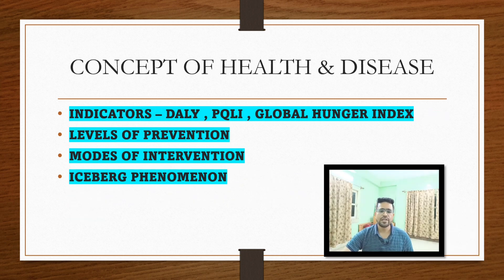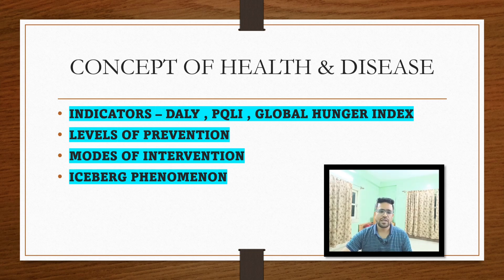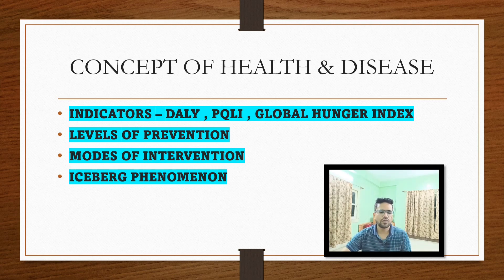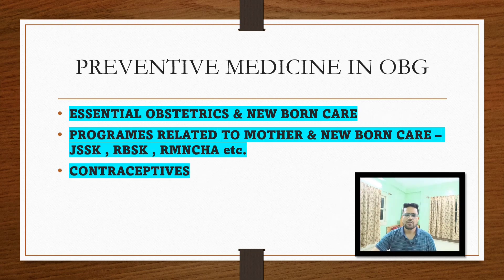From the concept of health and disease chapter, read indicators like DALY, PQLI, global hunger index; levels of prevention — primary, secondary, tertiary; modes of intervention; and iceberg phenomena. Kindly read these four topics — UPSC CMS asks these again and again in different forms. I have collected these for you so you do not have to do the extra work of finding important topics.